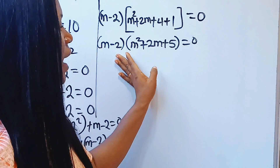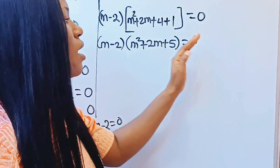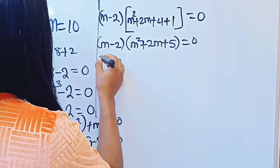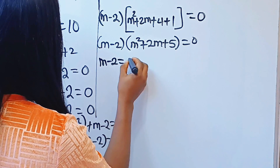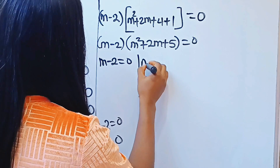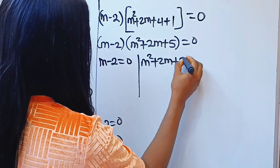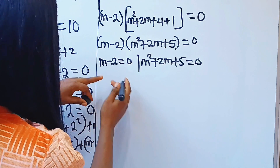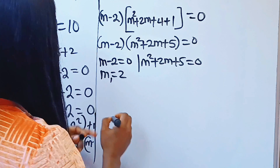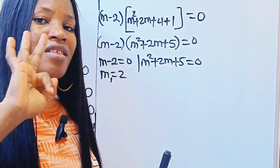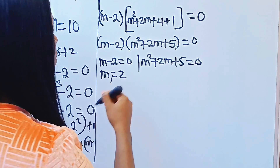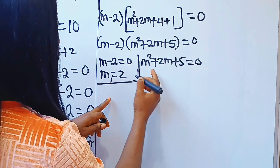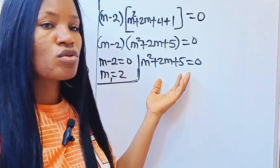Now we have two brackets equated to 0. That simply means that either this is 0 or this is 0. So we can say m minus 2 equals 0, or m squared plus 2m plus 5 equals 0. It's very obvious that m equals 2 is the first value of m. It's remaining two values. This second equation is where we use the quadratic formula.